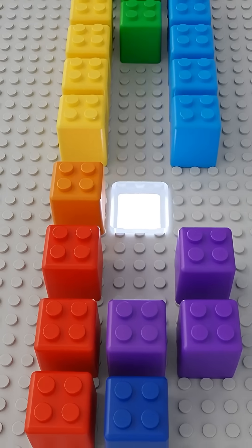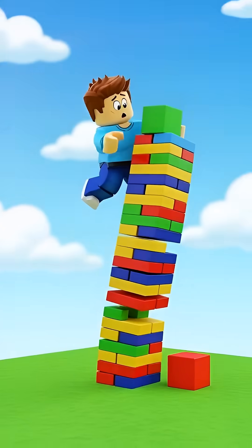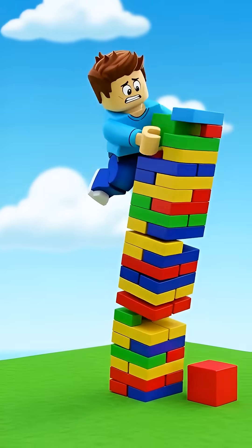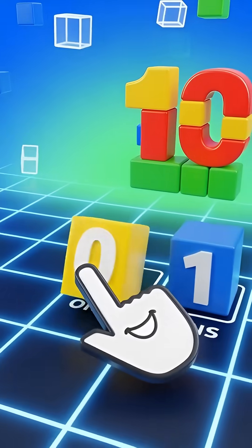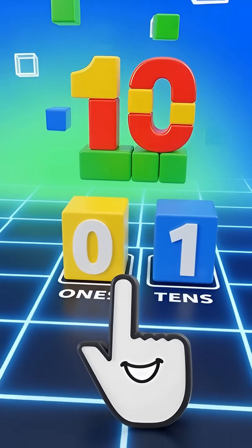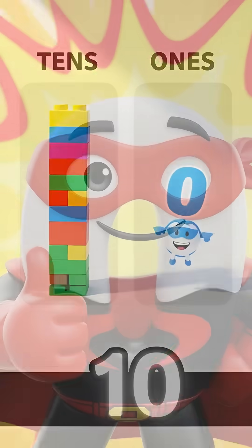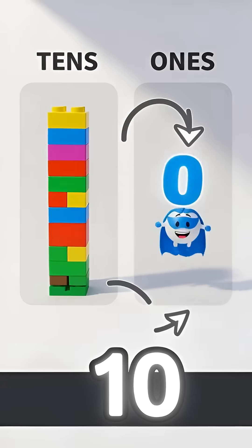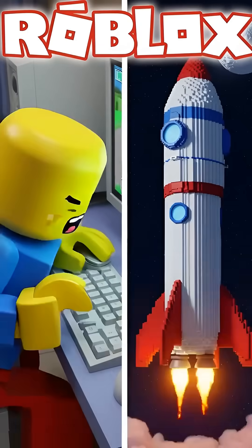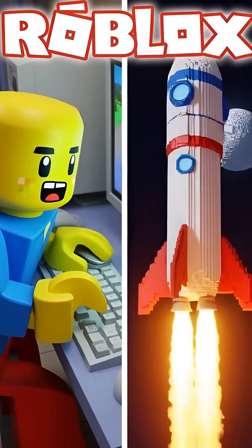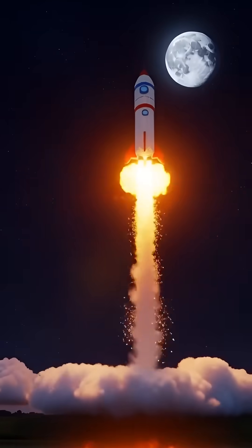Think of zero like an empty building block slot in Roblox. You can't build something tall without knowing where the empty spaces are. Zero helps us put numbers in the right place — it's a placeholder hero. So ten means one ten and zero ones. Without zero, we wouldn't have computers, video games, or even be able to launch rockets to space.